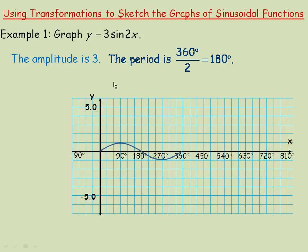We're going to use the 5 defining points that define a sine graph: the beginning, the middle, the end, the peak or maximum point, and the trough or minimum point. These two transformations — amplitude 3 and period 180 degrees — do not change where a period starts, so we still begin at the origin at (0, 0).